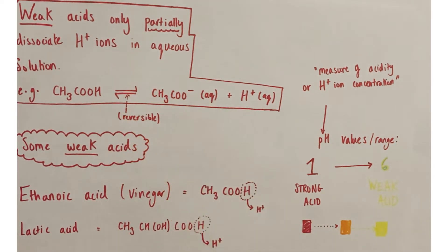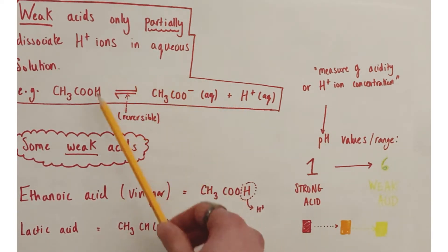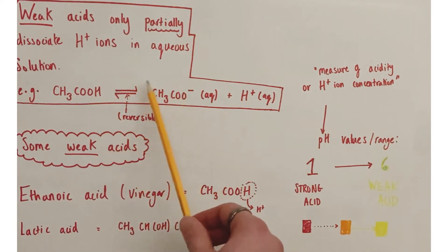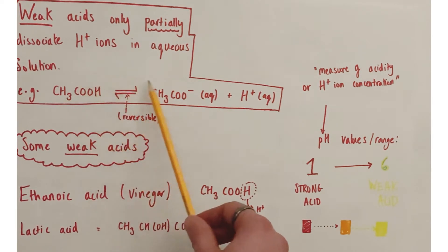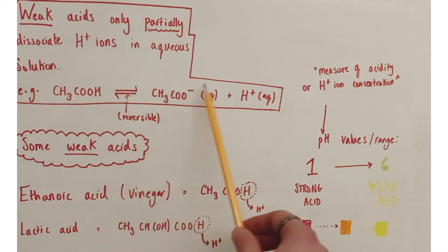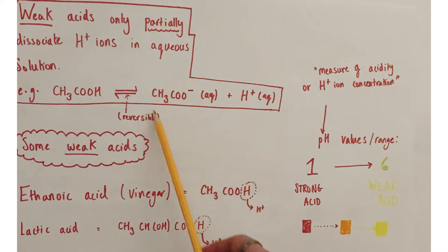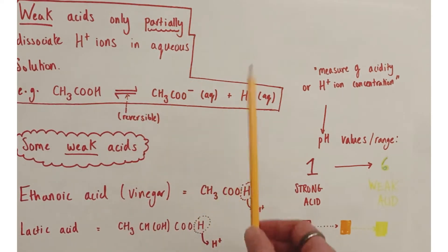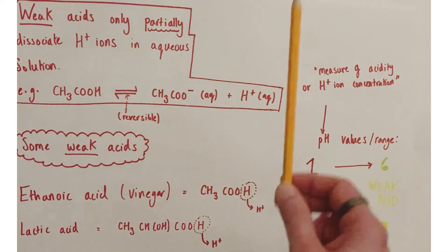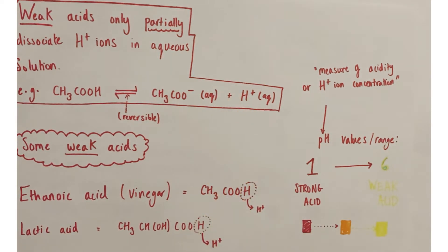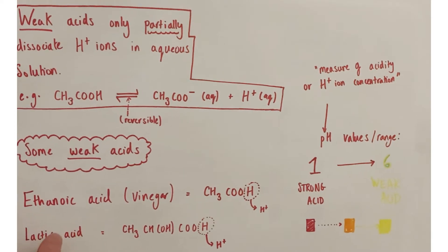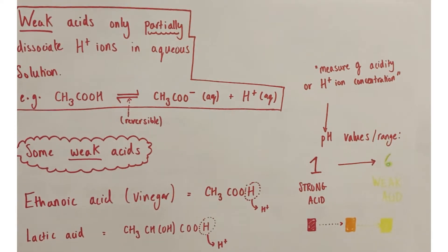The position of equilibrium for ethanoic acid is shifted heavily to the left-hand side, so a very small proportion of dissociation is happening — maybe one in a hundred molecules at any one moment will be releasing their hydrogen ion — producing a much weaker acidic solution as a result.